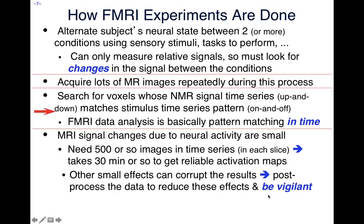How are fMRI experiments done? Because we're only measuring changes from the baseline, we have to alternate the subject's state between two or more conditions. That's done with task performance, sensory stimuli — that's the creativity of you neuroscientists. During this time we acquire a lot of MR images over and over, very fast. This is the technology that makes fMRI possible: acquiring images of the brain really fast, in a second or two. After that, we search for voxels — locations in the brain where the NMR signal time series matches the stimulus time pattern.